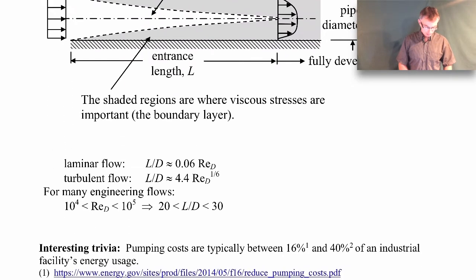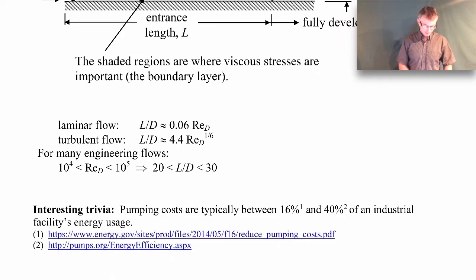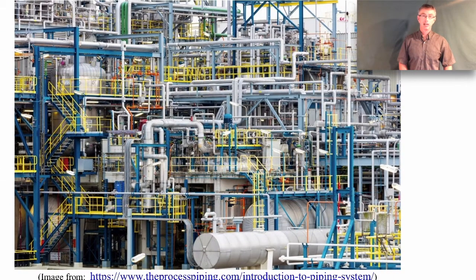The only other thing I want to say in this lecture is this little bit of trivia here. Pumping costs to basically pump fluid through pipes is somewhere between 16% and 40% of an industrial facility's energy usage. I mean, it's a lot. Pumping fluid through pipes actually takes quite a bit of energy. And you can see from this picture at the front here, I mean, there are a lot of pipes just in this one facility. So you can imagine the pumping costs are a pretty large fraction of the total energy usage of that facility.